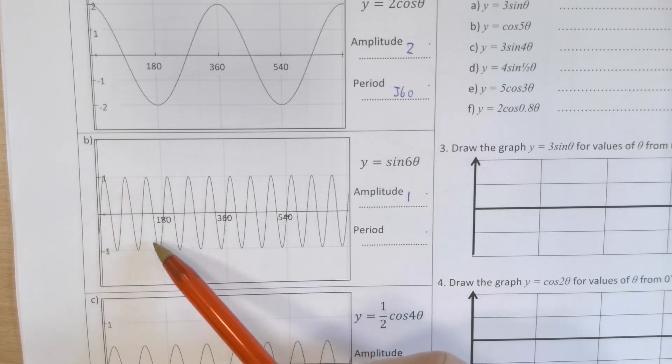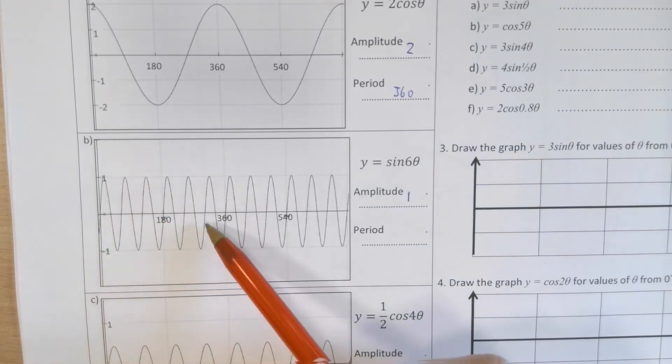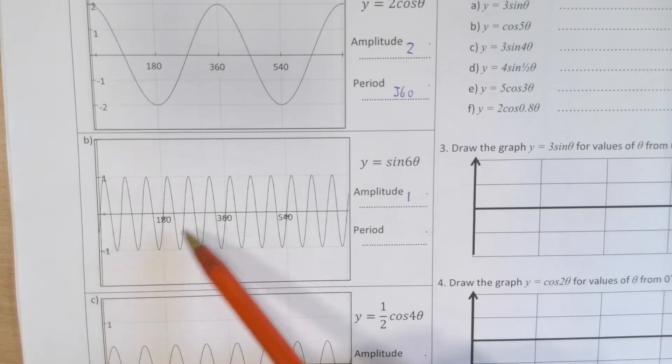5, 6. Yeah, there are six repetitions between 0 and 360.